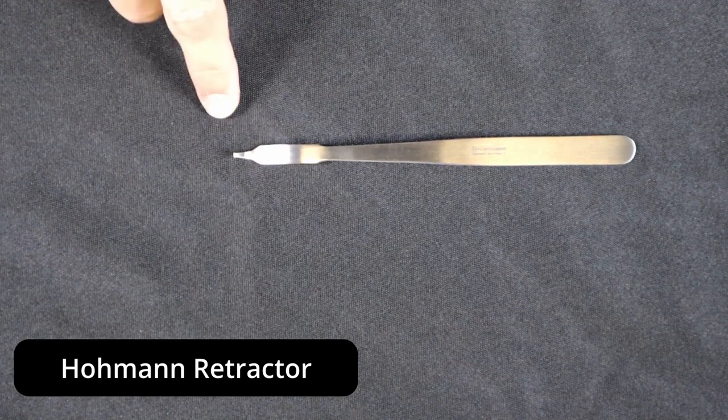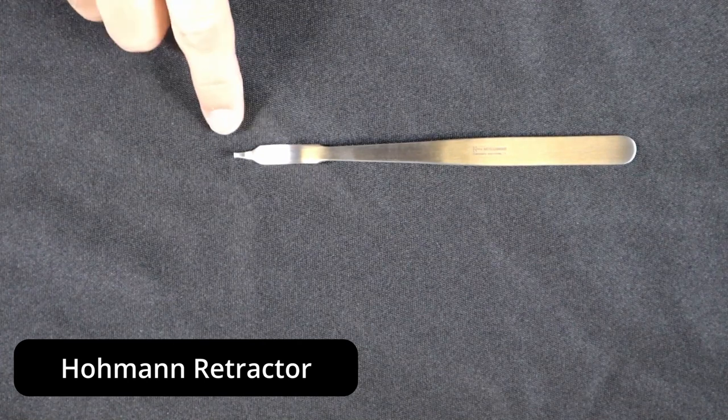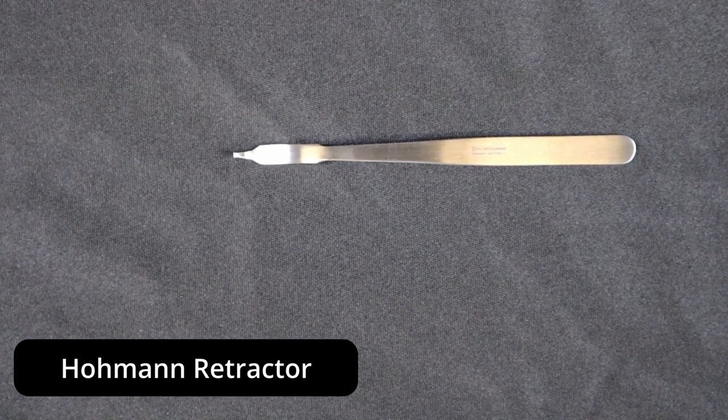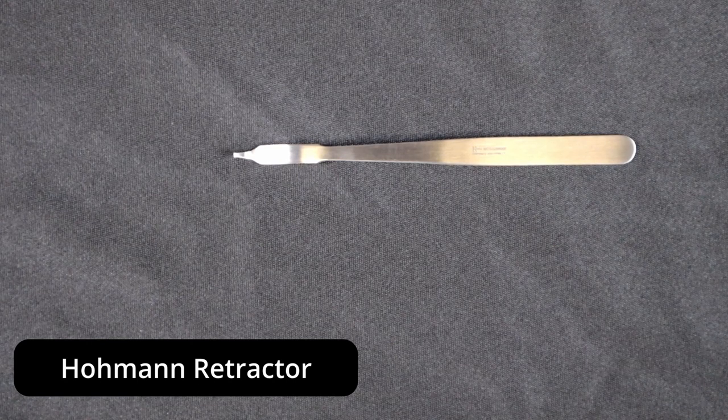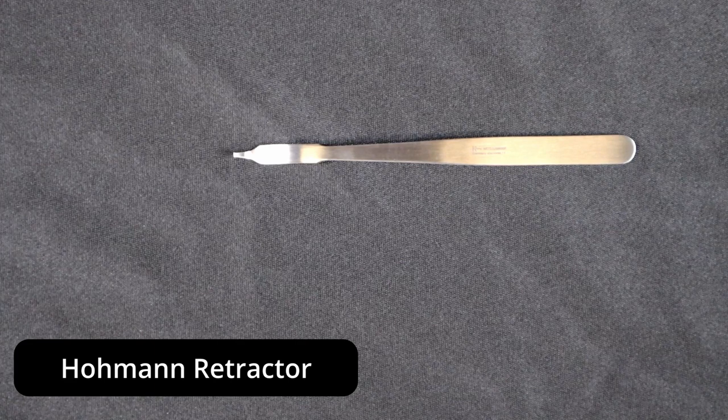So there are some folks out there that will put a tip protector, for instance, on the tip of their Hohmann retractors, especially for these smaller Hohmanns that are easier to damage than your full-size ones.